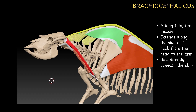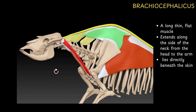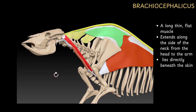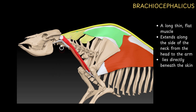The next muscle we will discuss is the brachiocephalicus muscle — a long, thin, flat muscle. So this muscle is the brachiocephalicus muscle. Brachio means related to the arm, cephalicus means head — that means the muscle extends from your head region to the arm region, that is why the name is brachiocephalicus. It is a long, thin, flat muscle extending along the side of the neck from head to the arm. It lies directly beneath the skin.